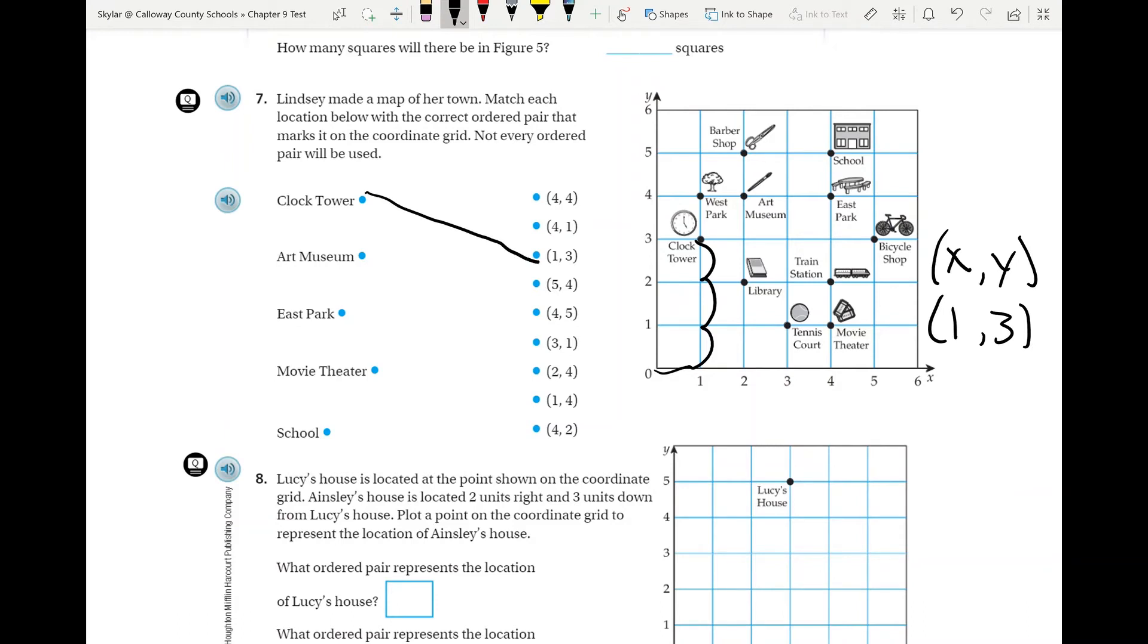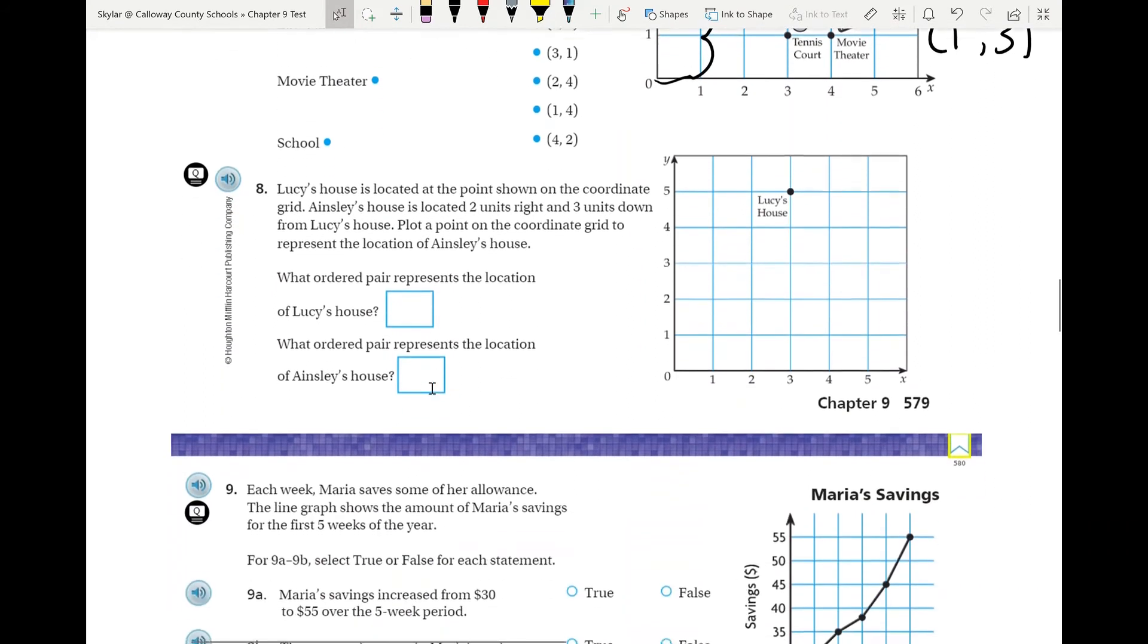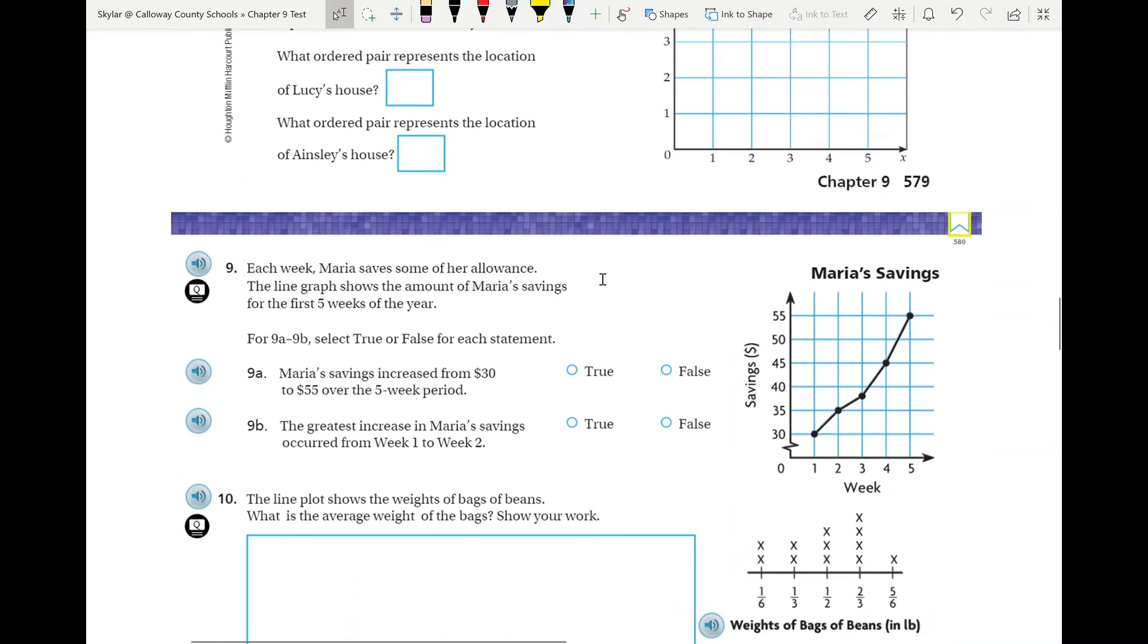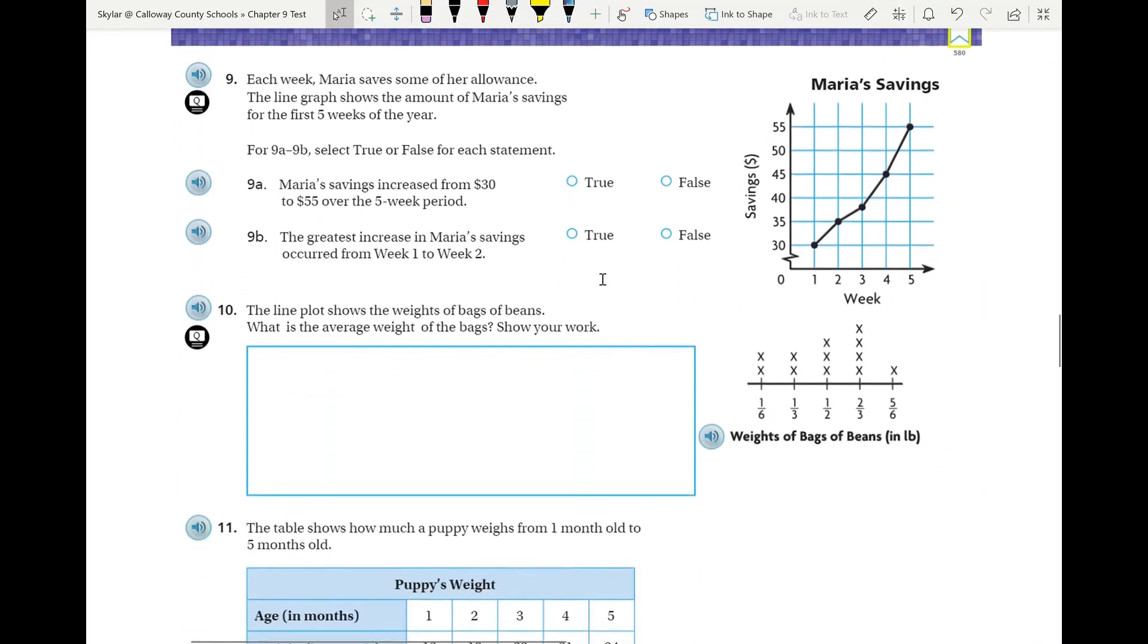All right, so number eight. Lucy's house is located at the point shown on the coordinate grid. So remember, it is X coordinate before Y coordinate, and then to find Ainsley's house, you go two units right and three units down. Pretty straightforward right there. We're going to move right on along.